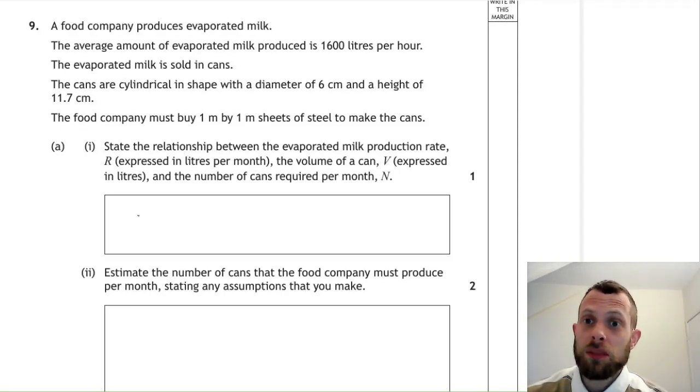So the company is producing milk, a certain amount of milk per hour, and they're putting the milk into cans. In part A, we're asked to state a relationship between the rate of milk production R, the volume of a can V, and the number of cans required per month N.